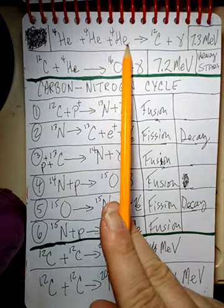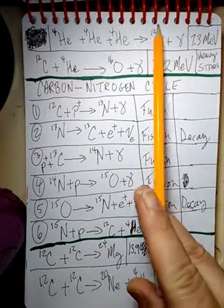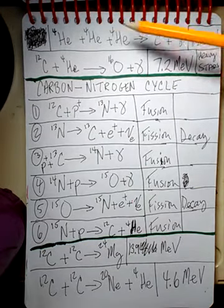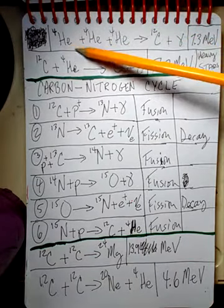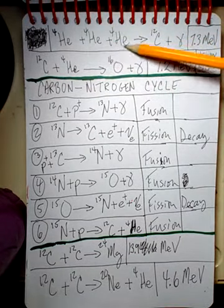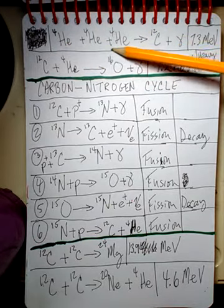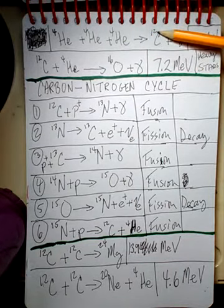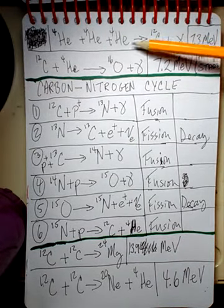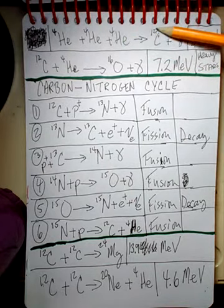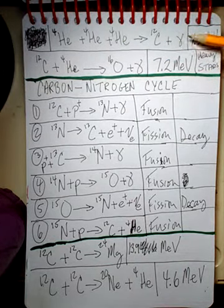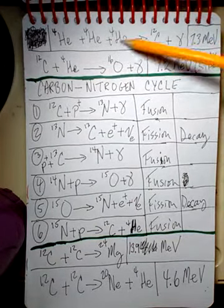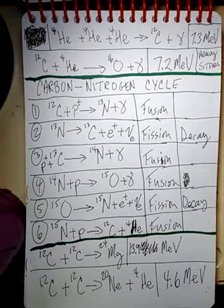Three helium nuclei will come together and create carbon — which is necessary, of course, for life. Three helium-4 nuclei, fused together through hot temperatures and high interaction probabilities, will create carbon-12, plus a gamma photon. The energy given off by this reaction is about 7.3 MeV.